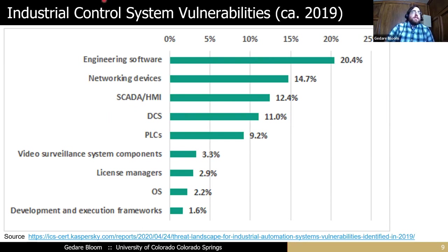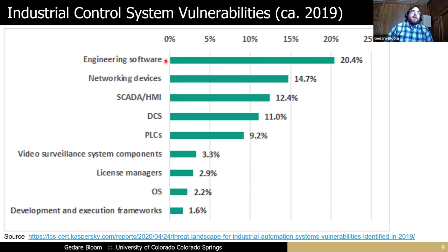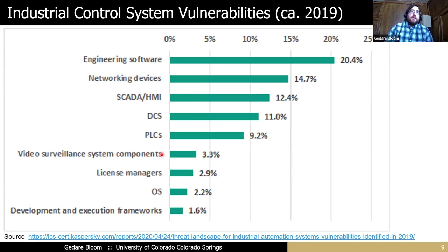It turns out that when you look at industrial control systems, operational technology, and cyber-physical systems — these are all kind of synonymous — the number one source of attack vulnerabilities is the software, the engineering software. Engineering 101: focus on your bottlenecks, optimize your big problem. So we're going to focus on the engineering software. Networking devices and SCADA networks are also problems, but those are lower down the list. Vulnerability counts aren't the best metrics, but they're good enough to guide your engineering effort.